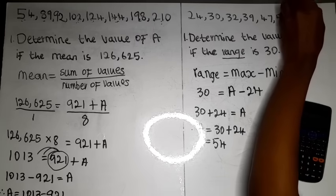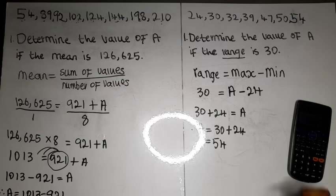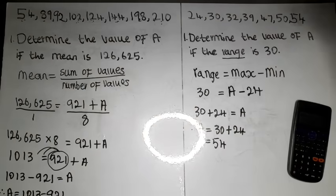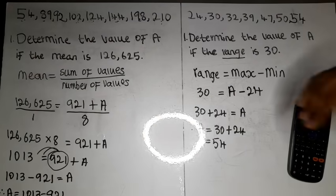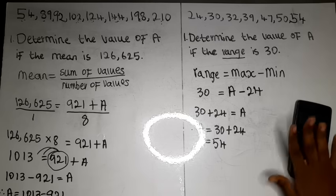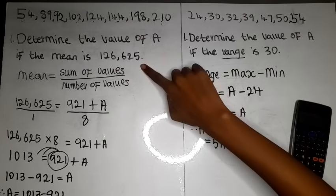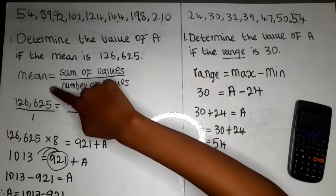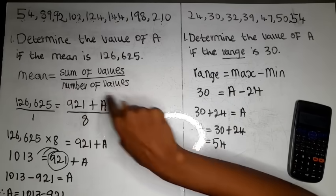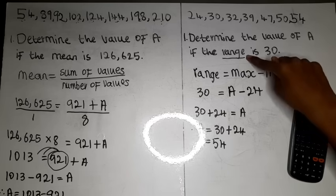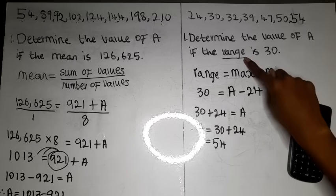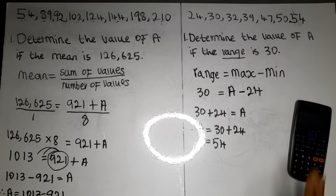This means we place 54 in our number sequence and it is now complete. This is how we deal with data handling when we've been given the range or the mean and have a missing value. You write the formula for whatever you've been given, substitute, and solve for the missing value. Thank you so much for watching — I hope you find it helpful. May goodness and grace lead you to great heights of success.